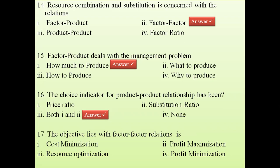Question 17: The objective of the factor-factor relationship. Since we are concerned about inputs (factors), we always try to minimize cost, because cost is associated with inputs. Return and profit are associated with the product. Therefore, the objective of factor-factor is cost minimization.